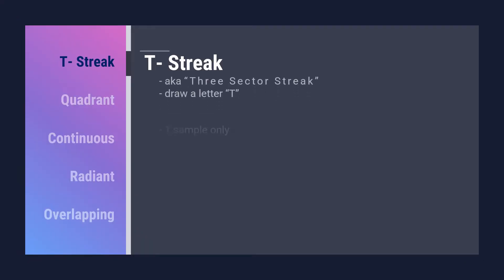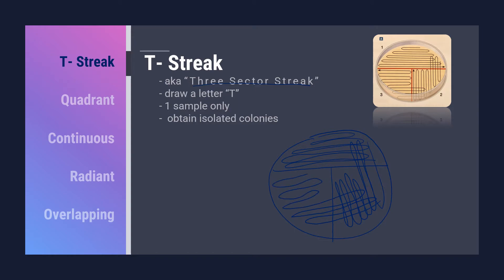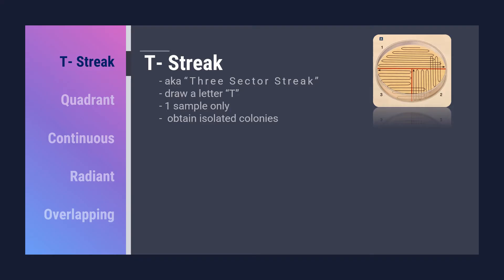The T-streak is also known as the three sector streak because we divide the plate into three sectors. We start by drawing an imaginary T on the Petri dish. The area above the T is where the primary streak is performed. The secondary streak is performed by touching some parts of the primary streak and spreading it throughout the second sector. The tertiary streak is done the same way by touching some parts of the secondary streak and isolating the rest on the third sector. New loops should be used on the secondary and the tertiary streak.